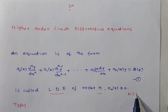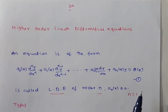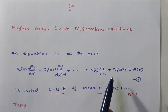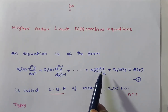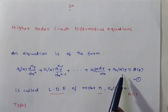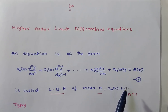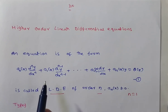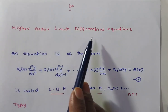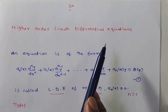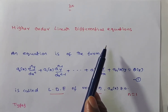If n = 1, it is a first-order linear differential equation: a₀(x) dy/dx + a₁(x)y = q(x), which is a first-order, first-degree linear differential equation. If n > 1, it is called a higher-order linear differential equation. In previous videos, we discussed first-order and first-degree linear differential equations.